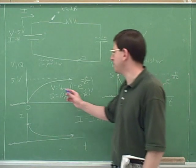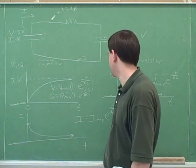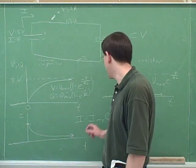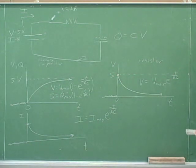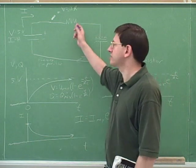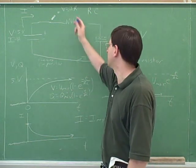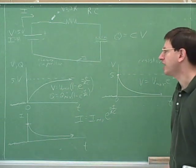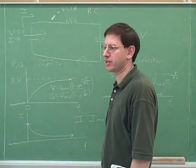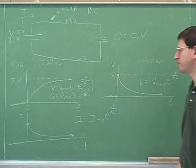What would V_max be in this problem? Five. Right — I didn't give you enough information to figure out Q_max or I_max, but V_max would be five. This is called an RC circuit for the very simple reason that it has a resistor and a capacitor. So we've seen how to interpret a charging RC circuit.